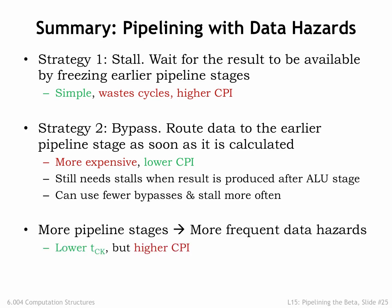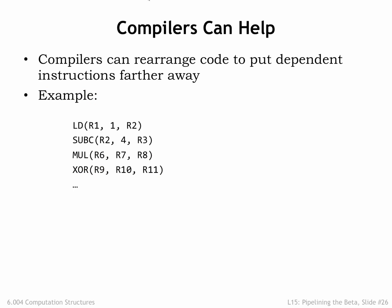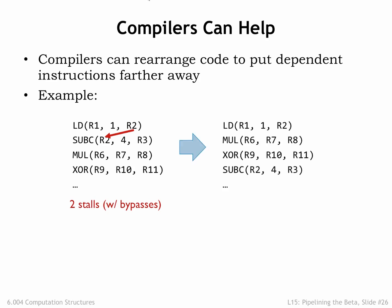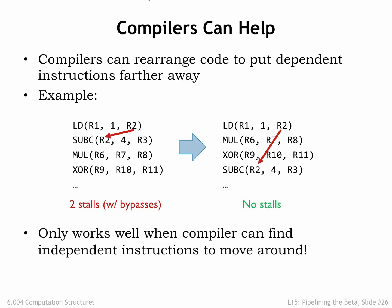Can we keep adding pipeline stages to further reduce the clock period? More pipeline stages mean more instructions in the pipeline at the same time, which increases the chance of a data hazard and the necessity of stalling, thus increasing CPI. Compilers can help reduce dependencies by reorganizing assembly language code. In the load-to-use hazard example, even with full bypassing we'd need to stall for two cycles. But if the compiler notices that the MUL and XOR instructions are independent of SUBC and moves them before it, the load is naturally in the write-back stage when SUBC is in the RF stage, so no stalls are needed. This optimization only works when the compiler can find independent instructions to move around.